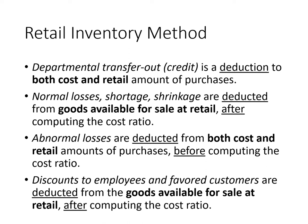Discounts to employees and favored customers are deducted from goods available for sale at retail, after computing the cost ratio. The treatment for employee discounts and normal losses is the same: both are deducted from goods available for sale at retail but not considered in computing the cost ratio. In effect, we just add them to net sales.